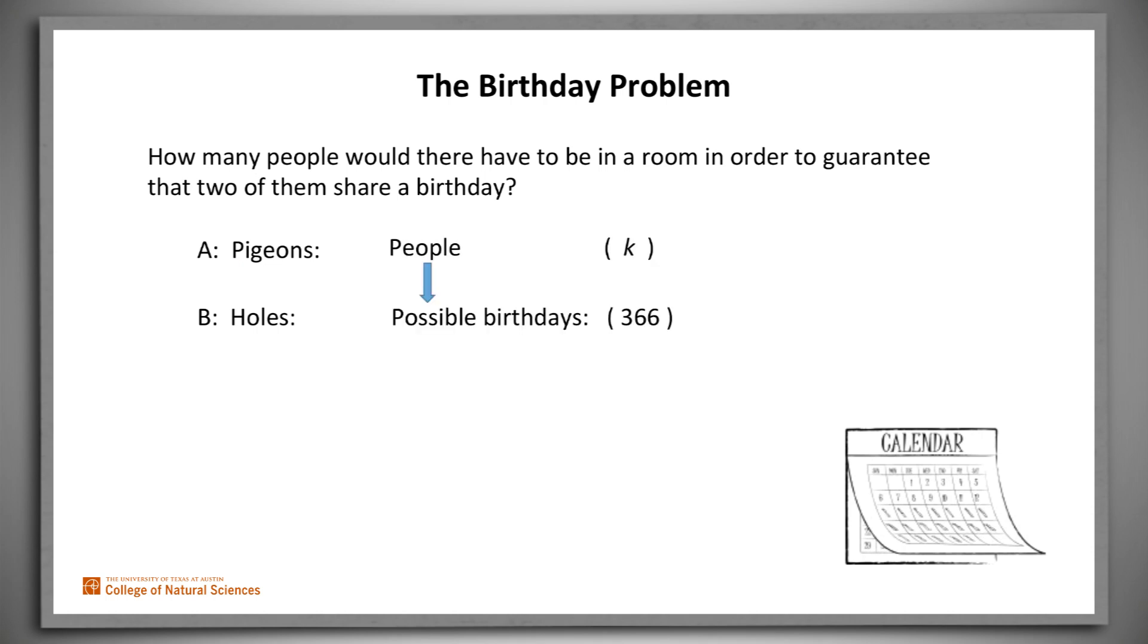Well, we want to let A be people who have to be mapped to elements of B, possible birthdays. Now the pigeonhole principle lets us recast our problem in the following way. What is the smallest value of K that makes this claim true?